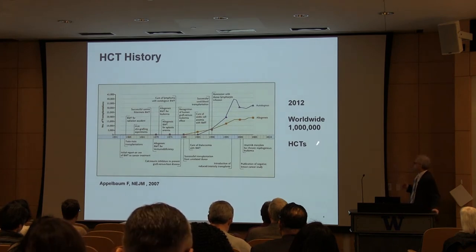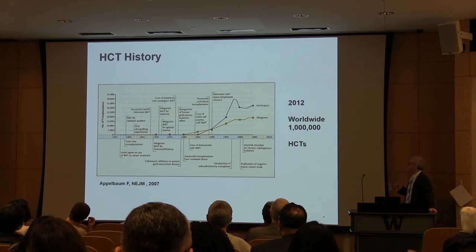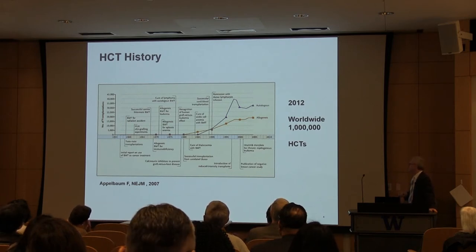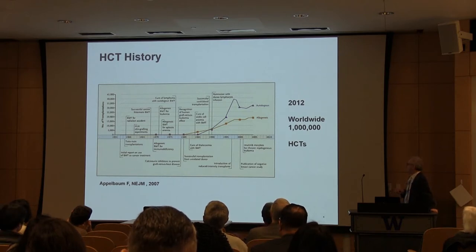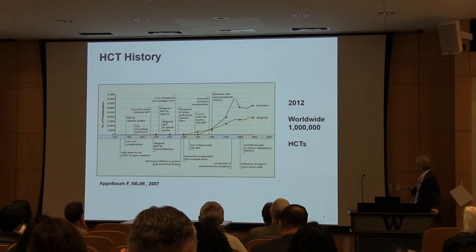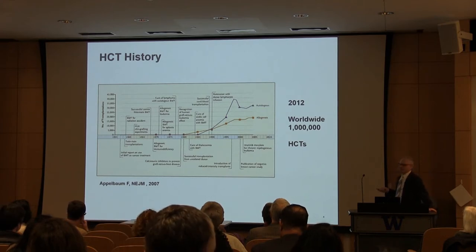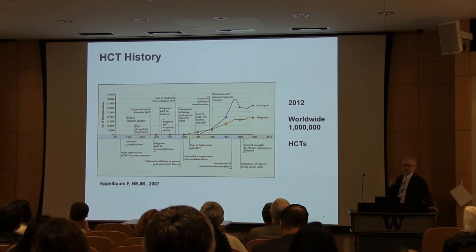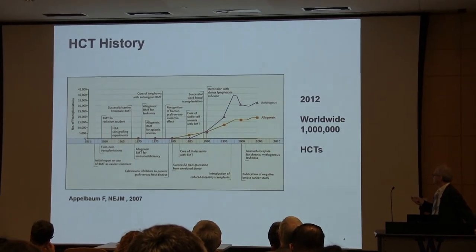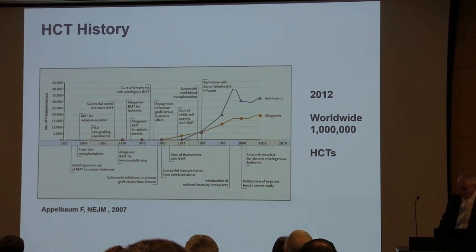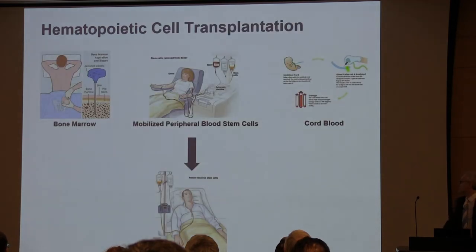The history of stem cell transplantation goes back to the 1950s when Dr. Thomas started this procedure here in Seattle. Dr. Appelbaum wrote a very nice perspective in the New England Journal outlining the enormous progression of knowledge and innovation that made this now a mainstream procedure. In 2012, the one million mark of procedures was passed worldwide, and it continues to grow and is now a standard of care for many diseases.